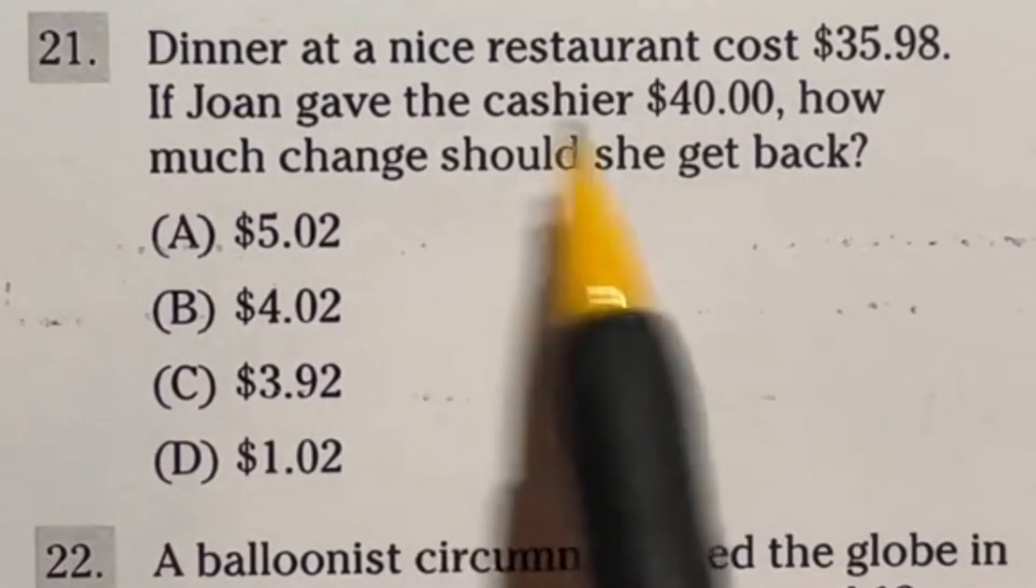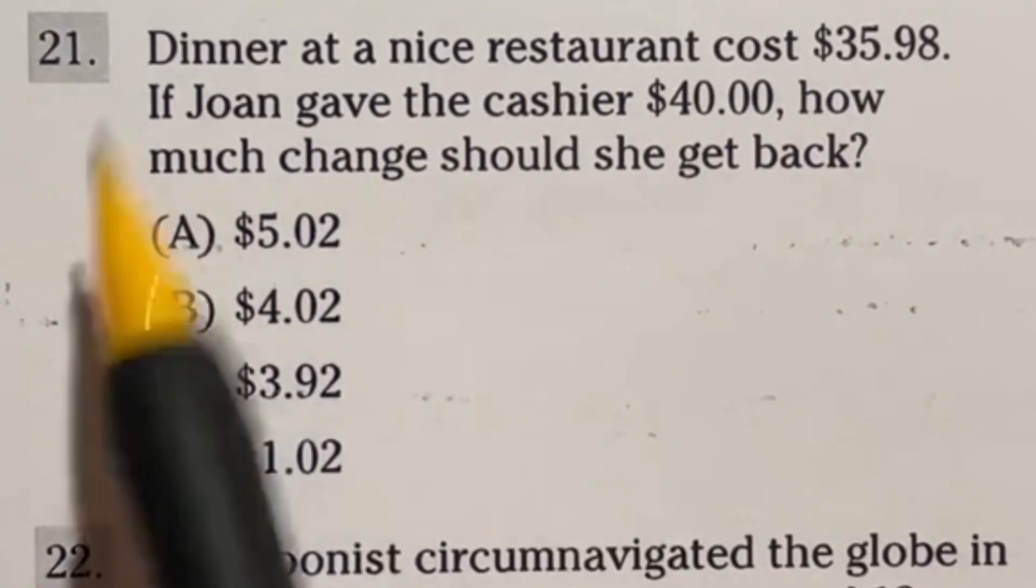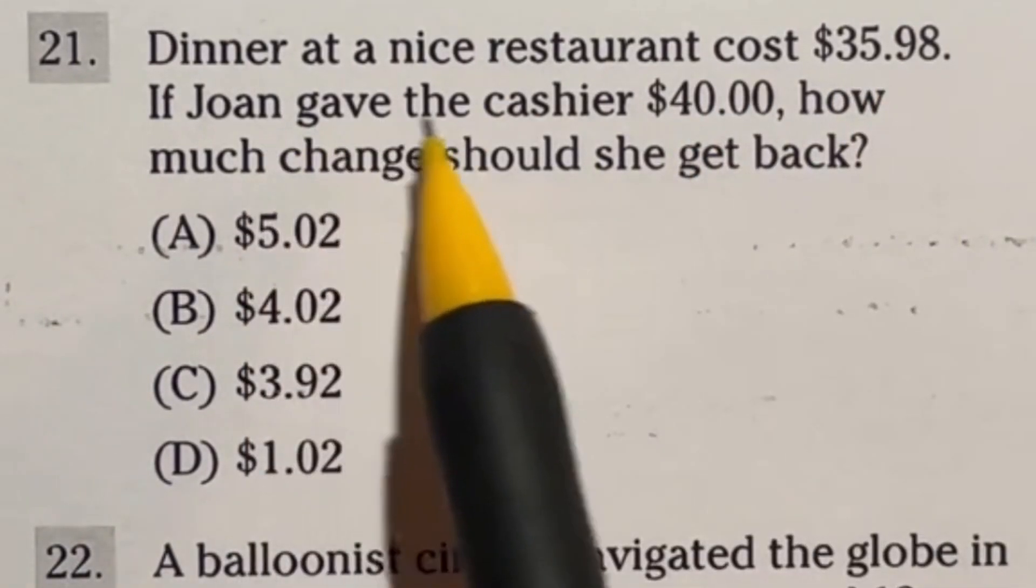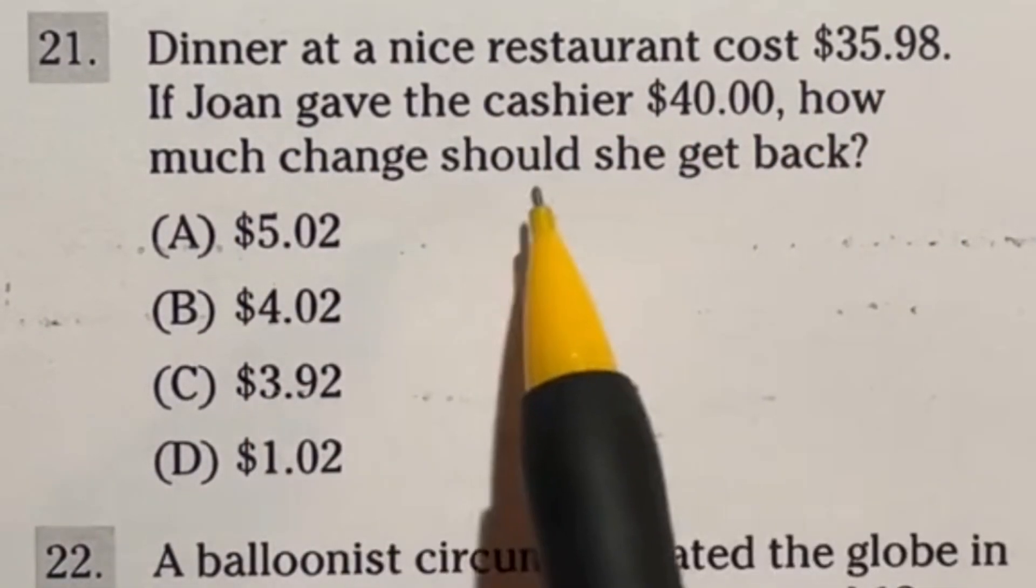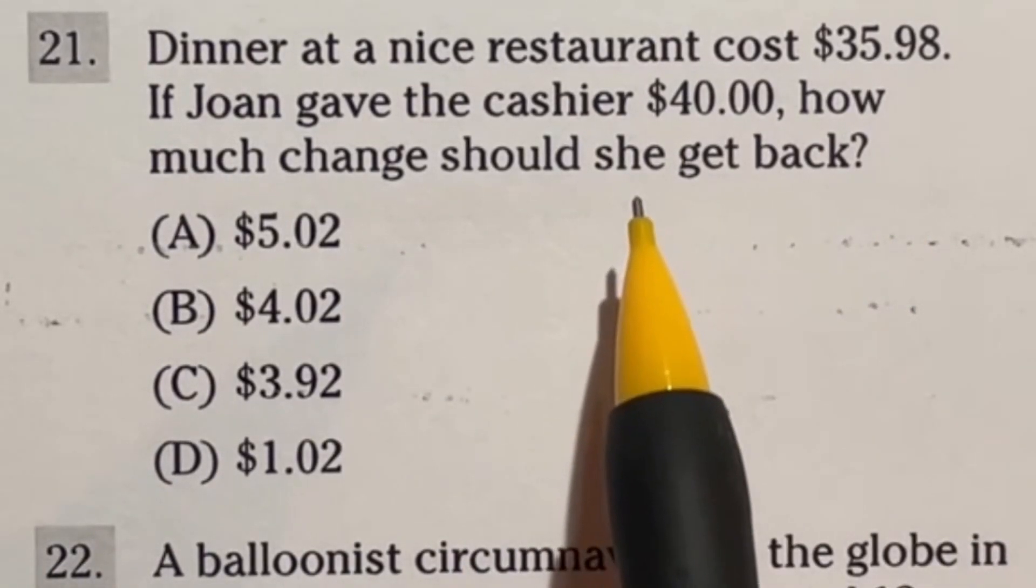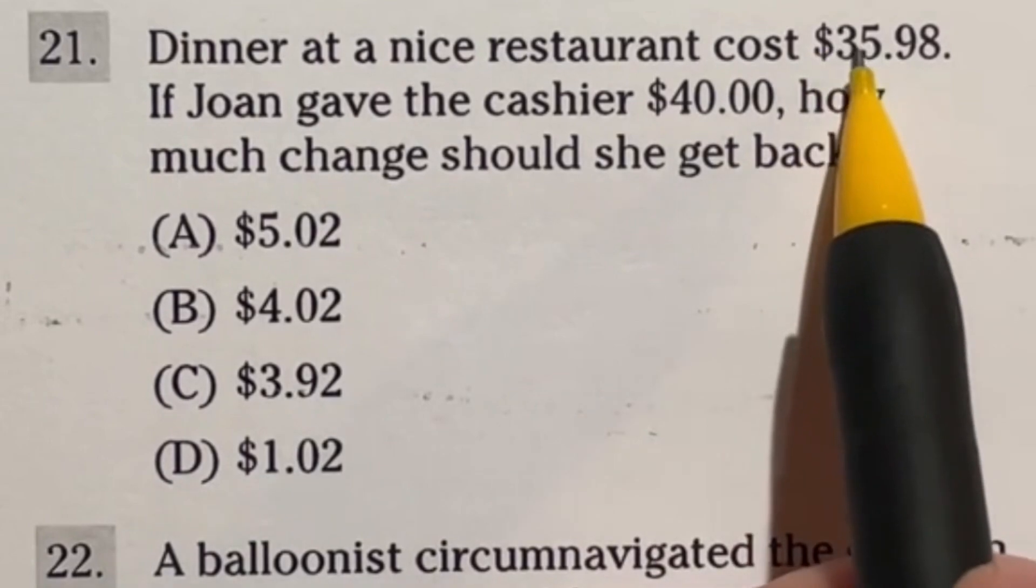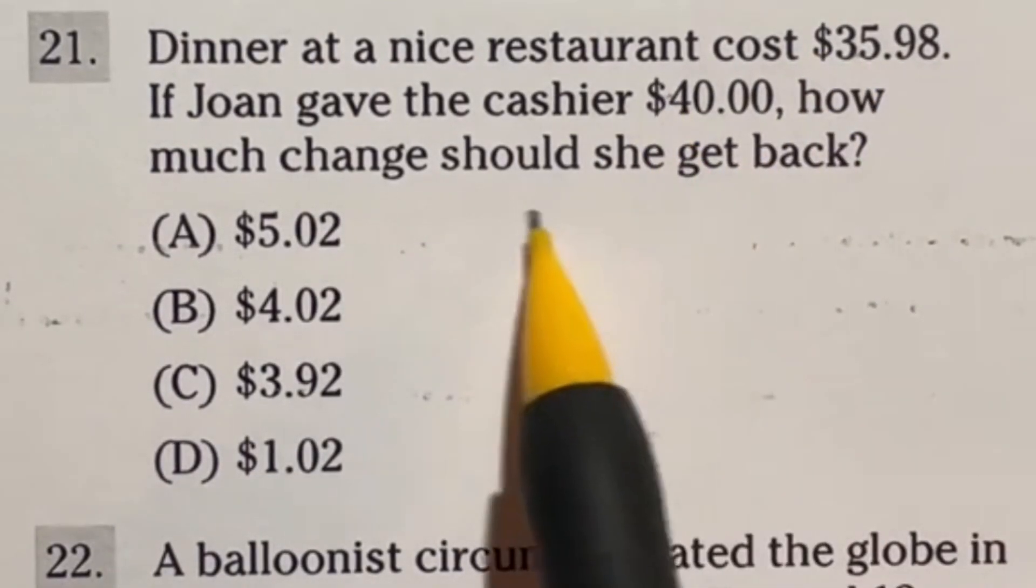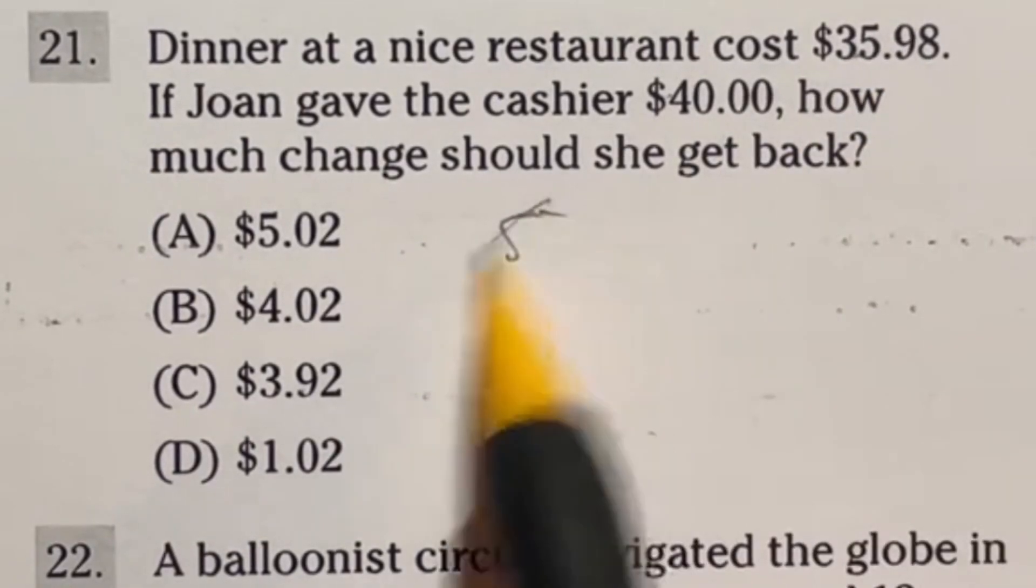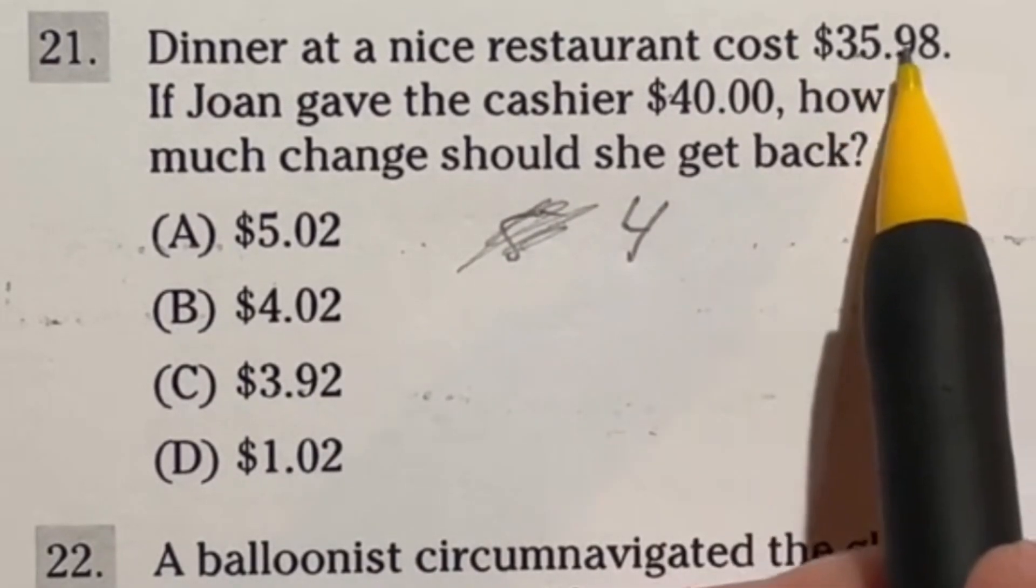More and more often I'm seeing how frequently issues like this pop up and people just don't know how to calculate their change. So let's take a look at number 21 on the ASVAB. It says dinner at a nice restaurant costs $35.98. If Joan gave the cashier $40, how much change should she get back? So let's talk about some basics. Let's get a ballpark number first and then we can easily lock in from there. If you're spending $35.98, I think most people would be able to tell the difference that $35 to $40 is a $5 difference. But here's the deal: you're paying more than $35. So that means your change will not include $5. It's going to be $4 instead because $35 and some change.